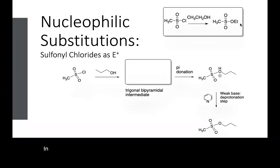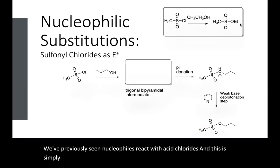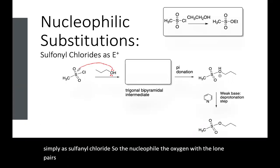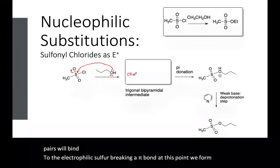In this video we're looking at a variation on a nucleophilic substitution. We've previously seen nucleophiles react with acid chlorides, and this is simply a sulfonyl chloride. So the nucleophile, the oxygen with the lone pairs, will bind to the electrophilic sulfur, breaking a pi bond. At this point we form a trigonal bipyramidal intermediate.